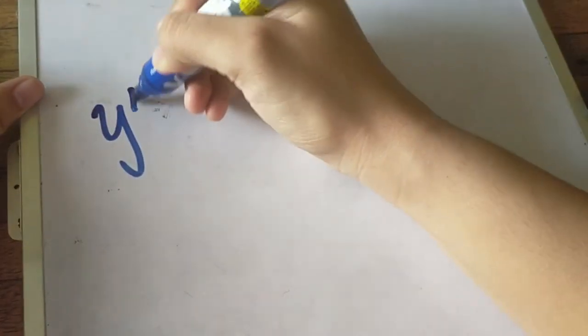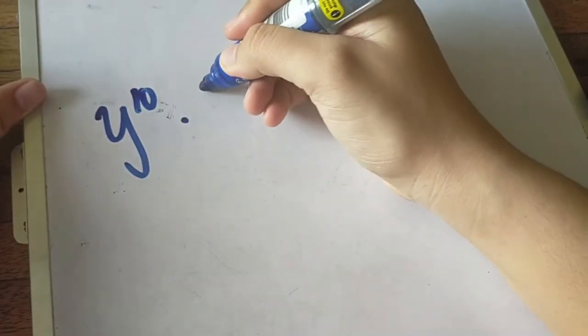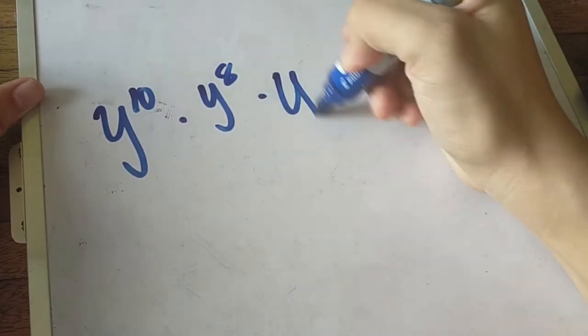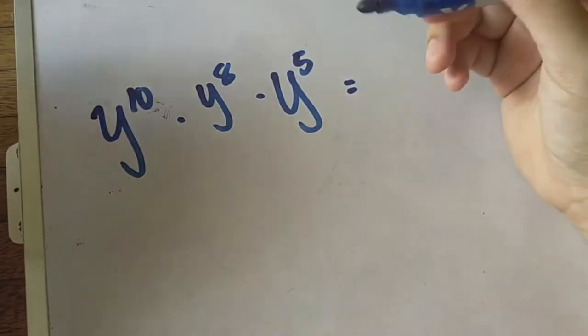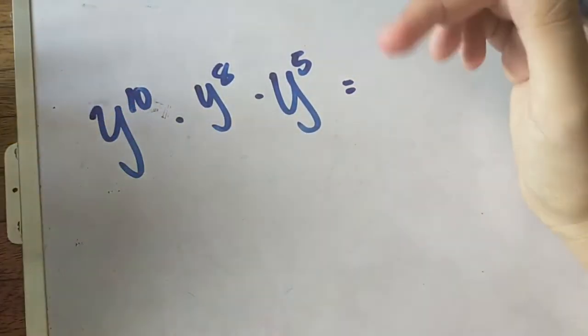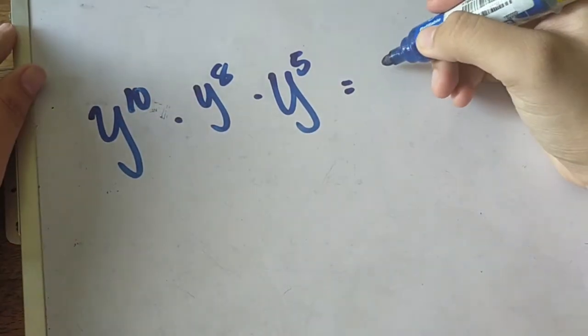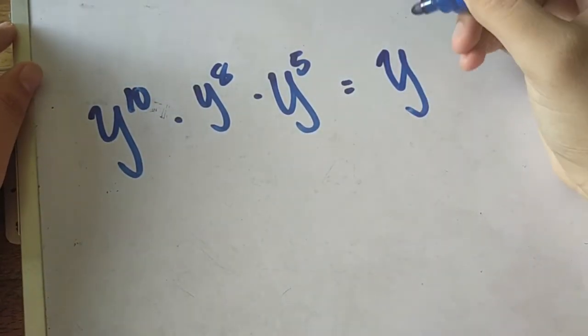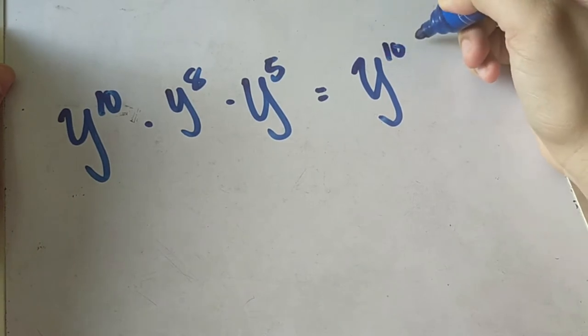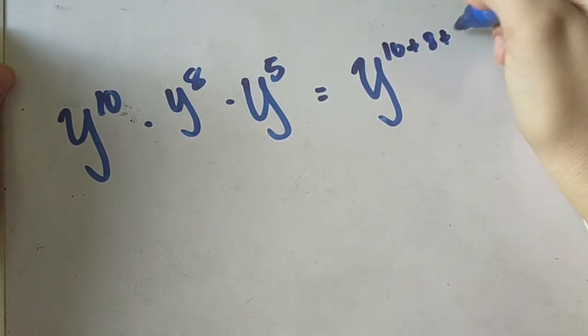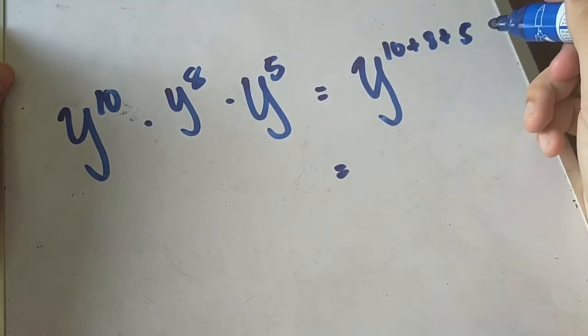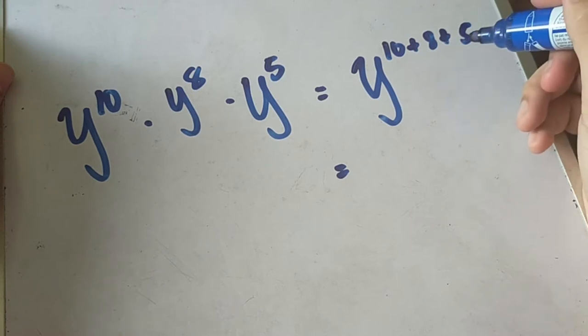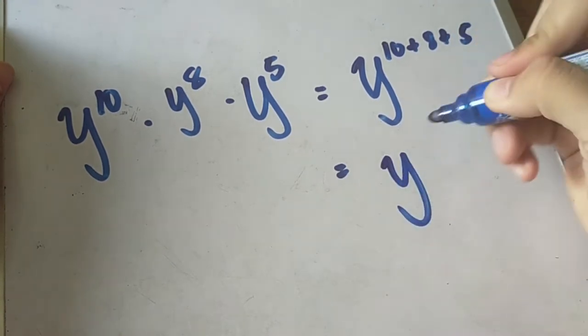Another example: we have y raised to 10 times y raised to 8 times y raised to 5. Since they are all having the same base, when we say base this is the large letter, we copy the base y and then we add the exponent. Raised to 10 plus 8 plus 5. 10 plus 8 plus 5 is 13, and plus 10 we have y raised to 23, and that is our final answer.